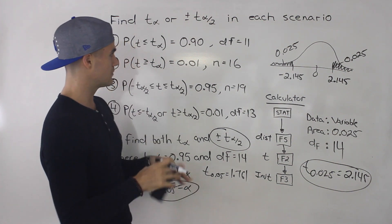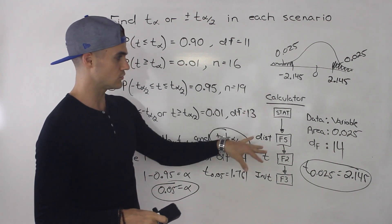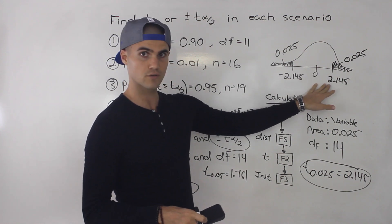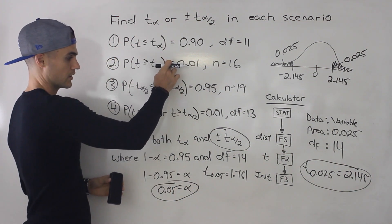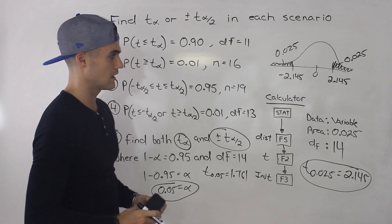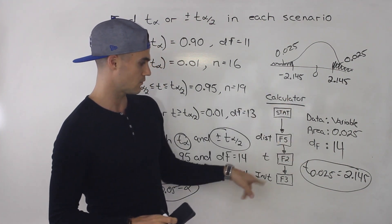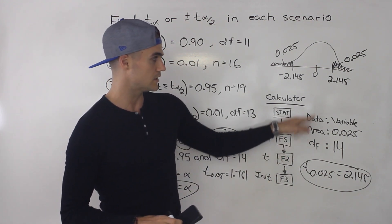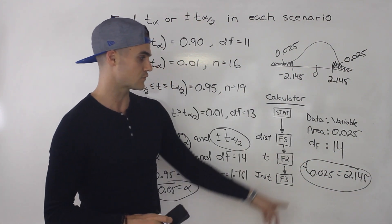These can get pretty tricky. The best thing to do when you get something like this is draw it out visually first. Then you'll know what areas you're looking for, what t values you're looking for, and whether you're dealing with one or two t values. Remember, when using the inverse t function on the calculator, the area you input is always to the right of the t value, and then you input the degrees of freedom to get the t value you're looking for.